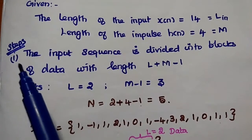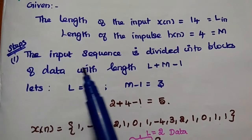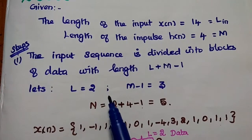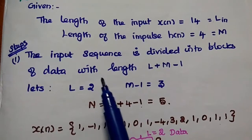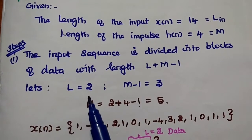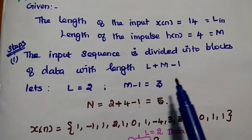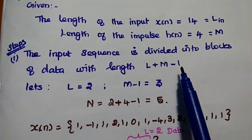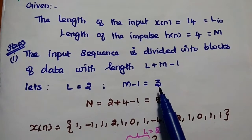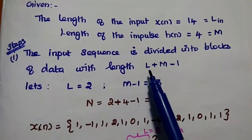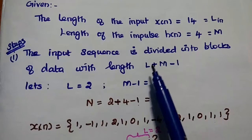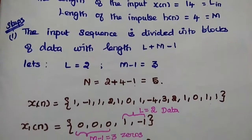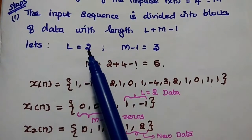The very first step in the overlap save method is to divide the given long duration input sequence into short duration sequences. The input sequence is divided into blocks of data with length L plus M minus 1, where M represents the length of the impulse signal. So M minus 1 means 4 minus 1, which is 3. Here L represents the number of data points taken from the input sequence to form each block, and we can assume L equals 2.